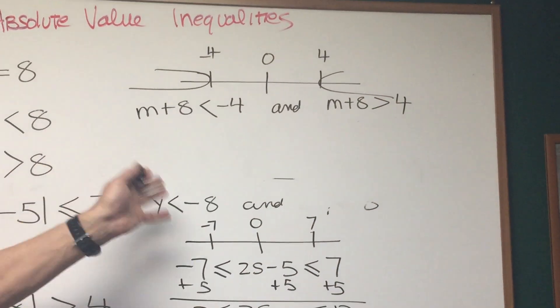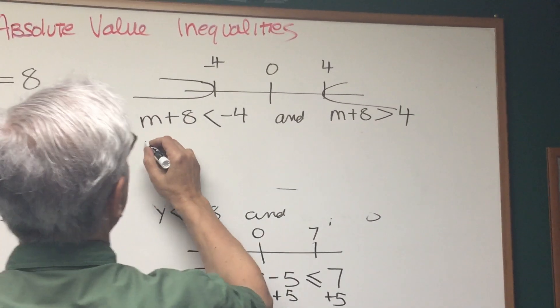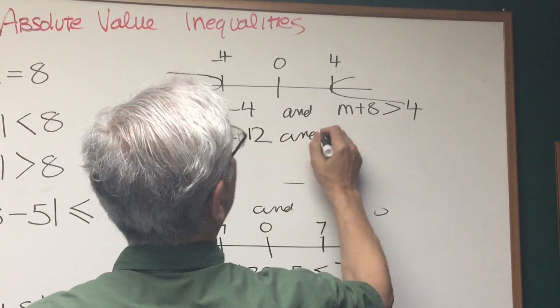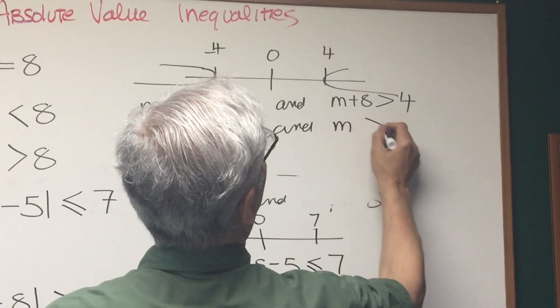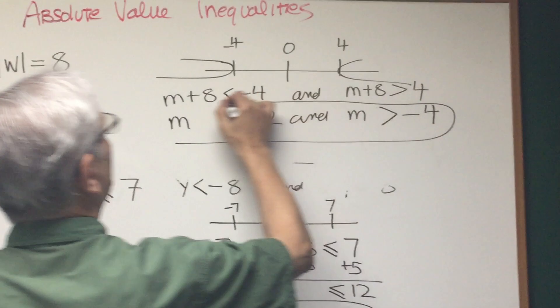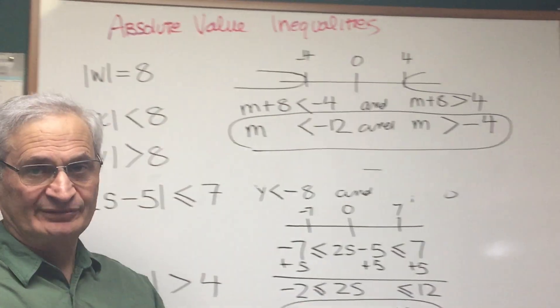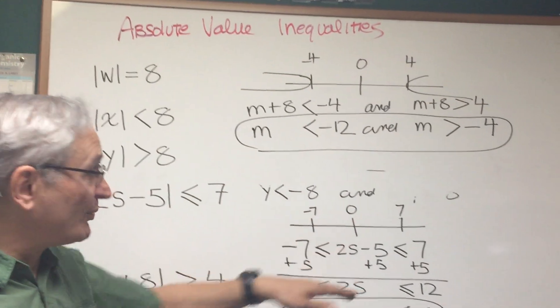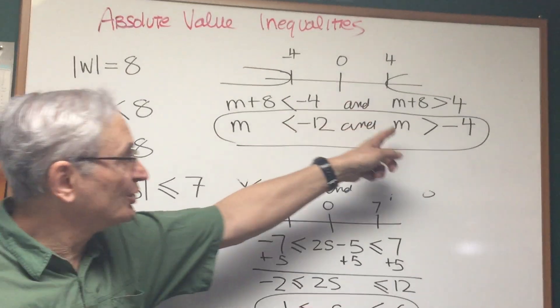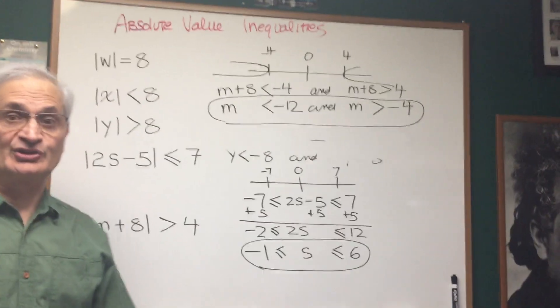We break it up into two parts. Let's solve for m. Subtract 8 from both sides, m is less than negative 12, and subtract 8 from both sides, m is greater than negative 4. And there is the expression for our solution, which can't be expressed in terms of one continuous interval. Once again, because it's greater than, it has to be two discontinuous intervals to get our solution.